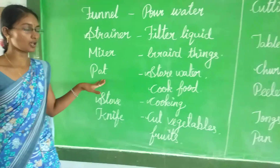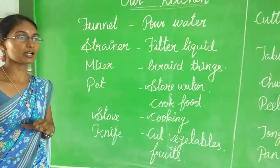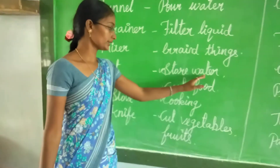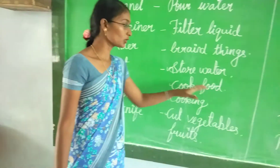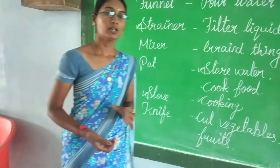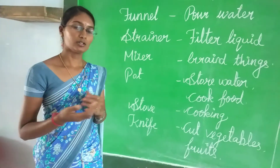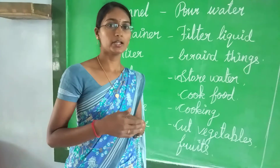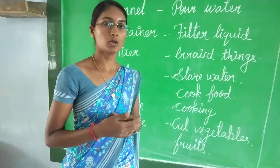Next, pot. Pot is what we use. It is used to store water and cook food. In long days ago, that is what we used to do in old days.